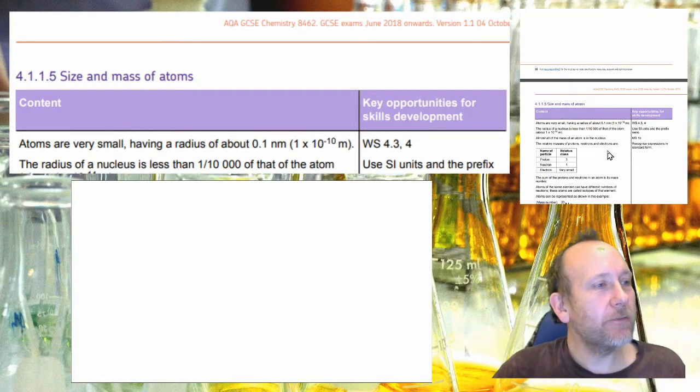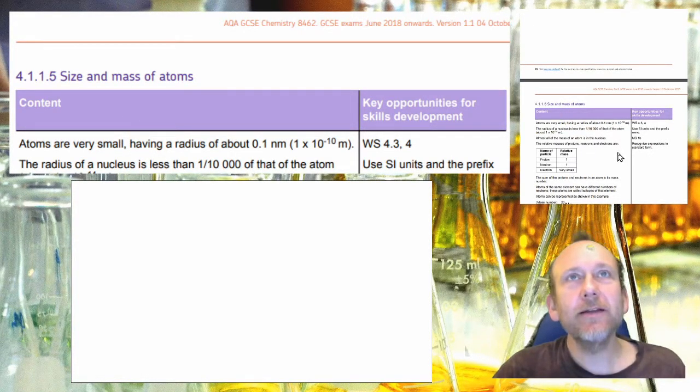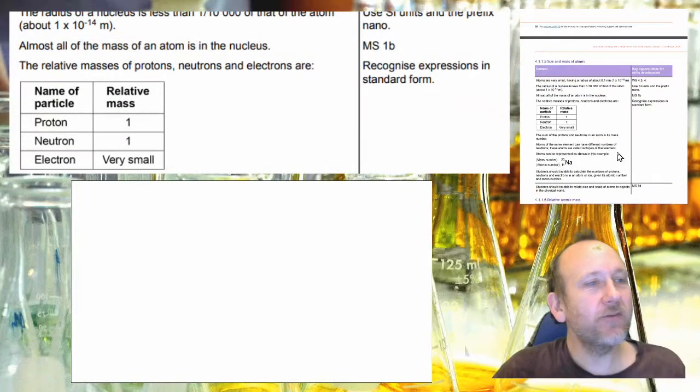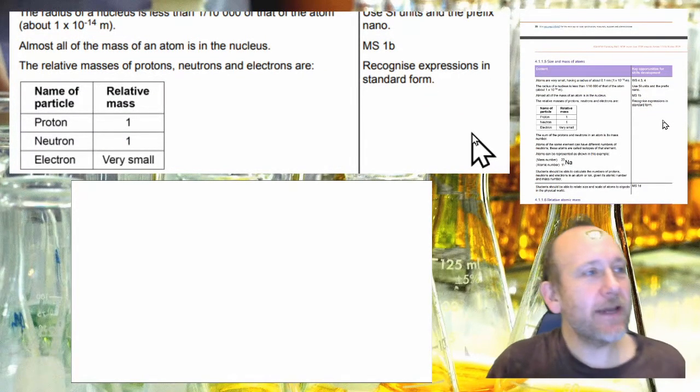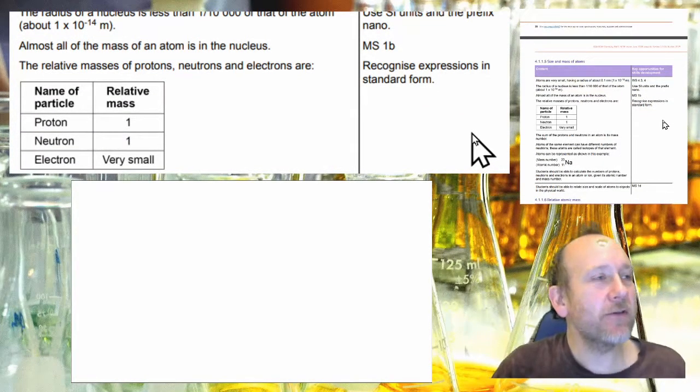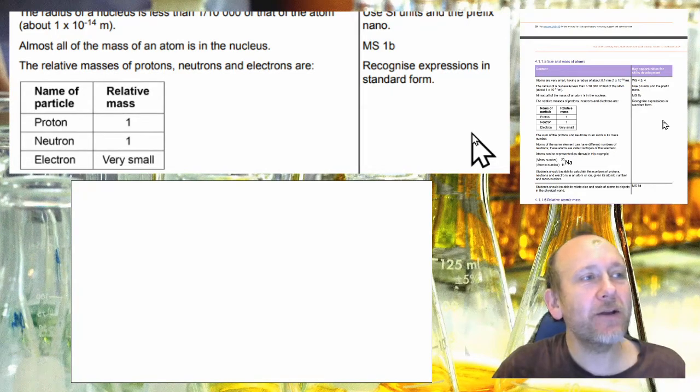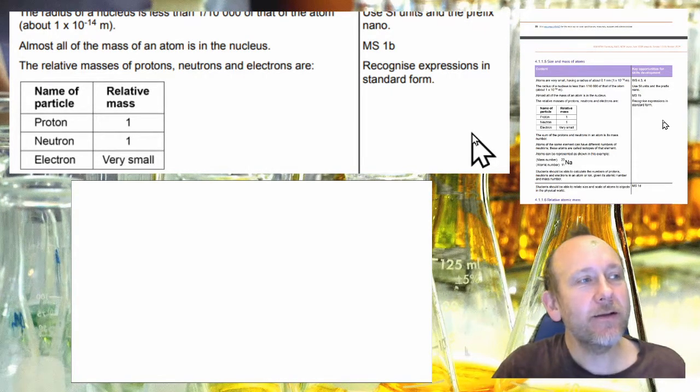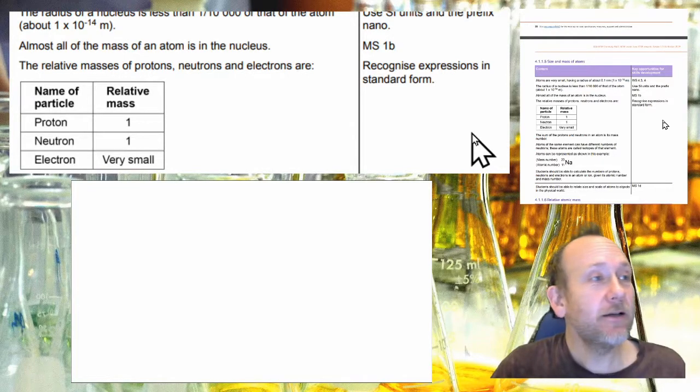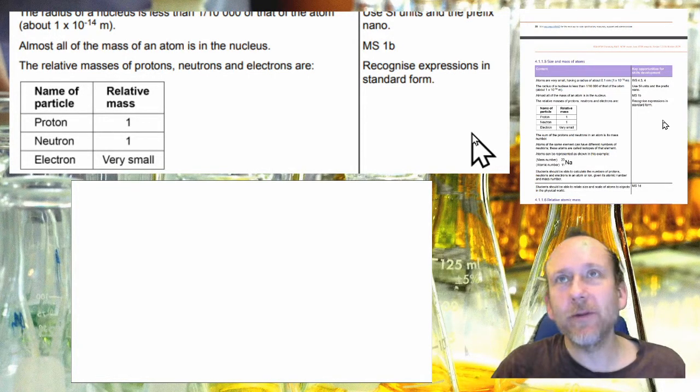So what we are going to briefly point out is that the size of an atom is incredibly small. So it's one ten-thousandth of one ten-thousandth. It's 0.1 nanometers which is about 1 × 10⁻¹⁰ meters.